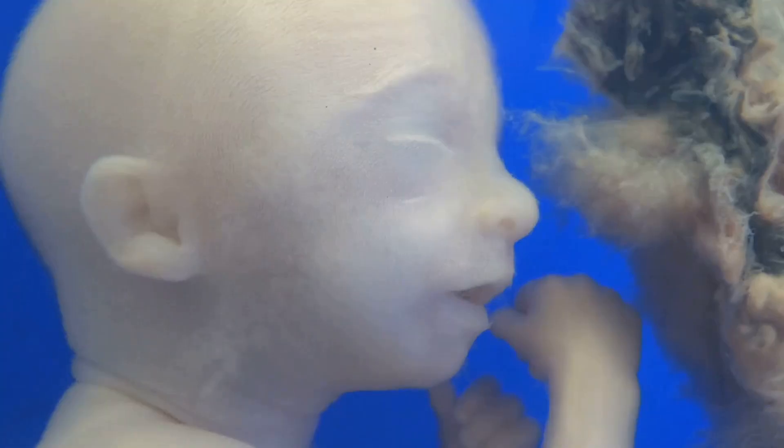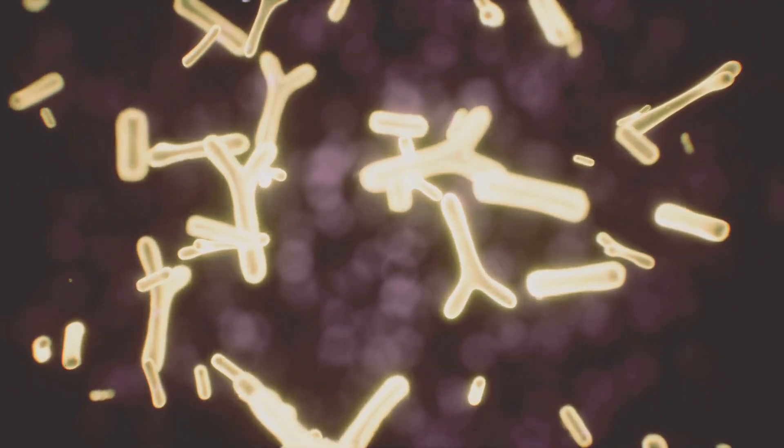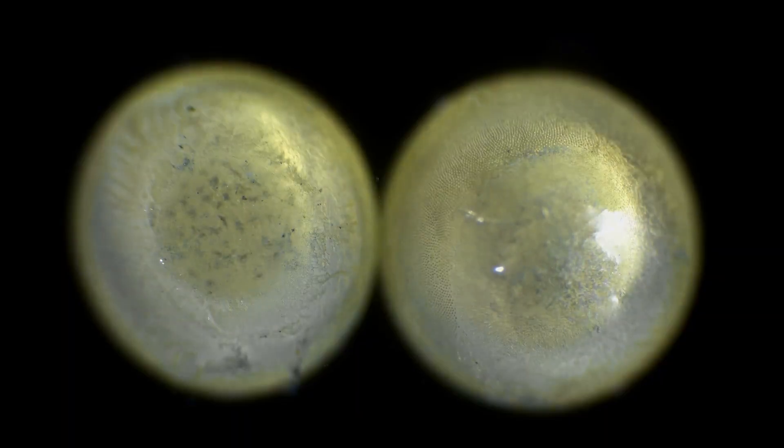And I'm not talking about your average cell division. This is like a cellular rave with the zygote splitting into two, then four, then eight cells, doubling every 12 hours. It's like a microscopic game of tag where everyone's it and everyone's winning. Now this cluster of cells has got a fancy name: a morula.